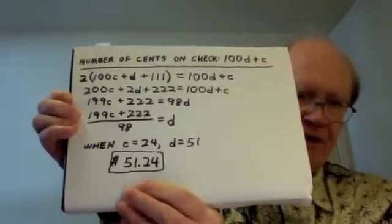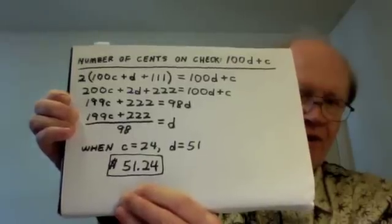But when I put 24 in for C, I got D equals 51. That suggests that the check could be for $51.24. I wanted to see whether another answer is possible, so I continued putting consecutive even numbers in for C — 26, 28, 30, 32, and so on — until D became more than 100. And in each case D was not a whole number. The only case where D is a whole number is when C is 24 and D is 51. Therefore, this must be the answer. The check was written for $51.24.